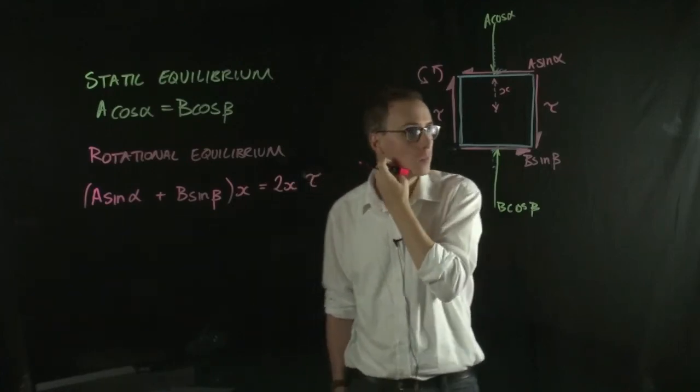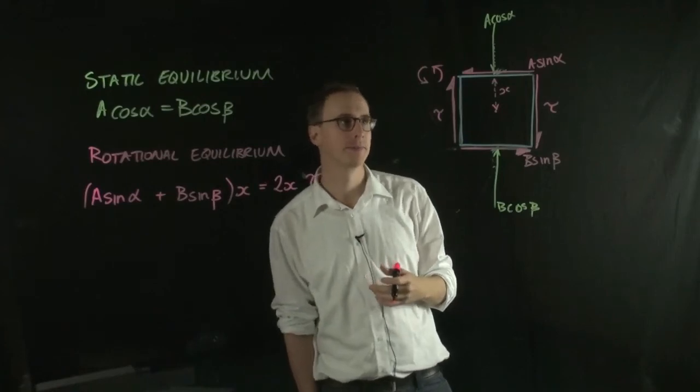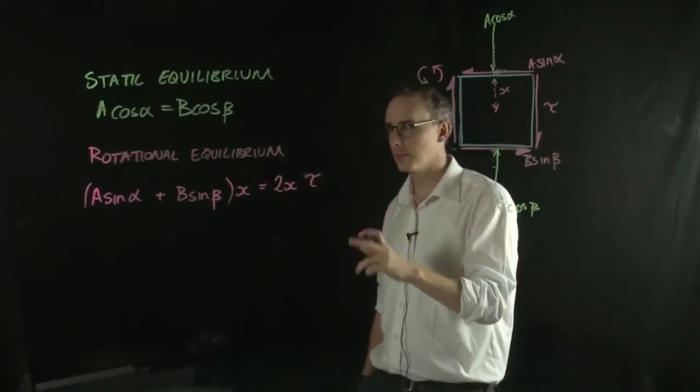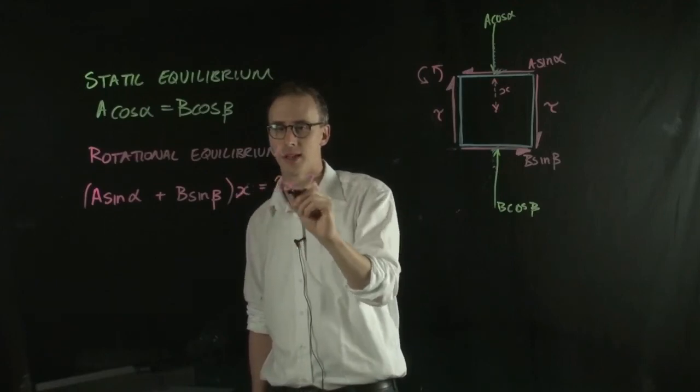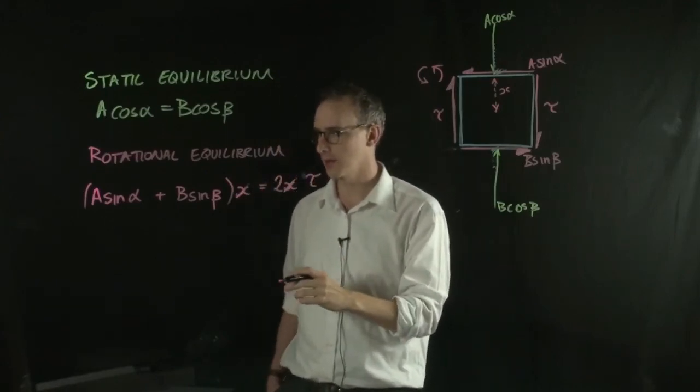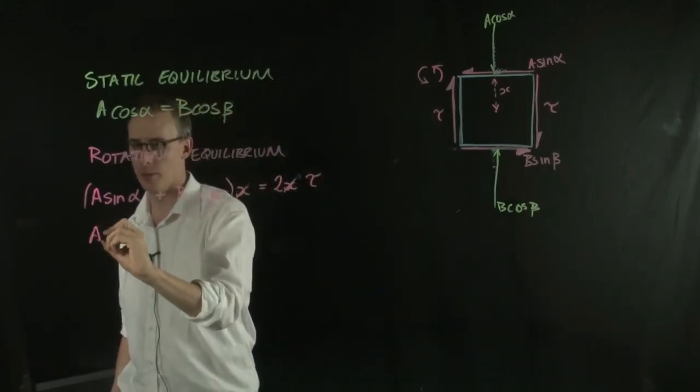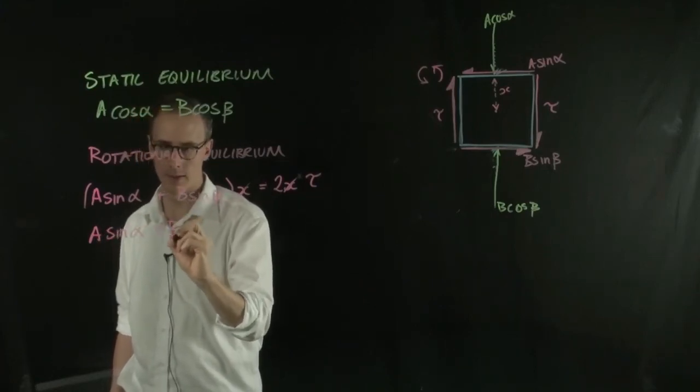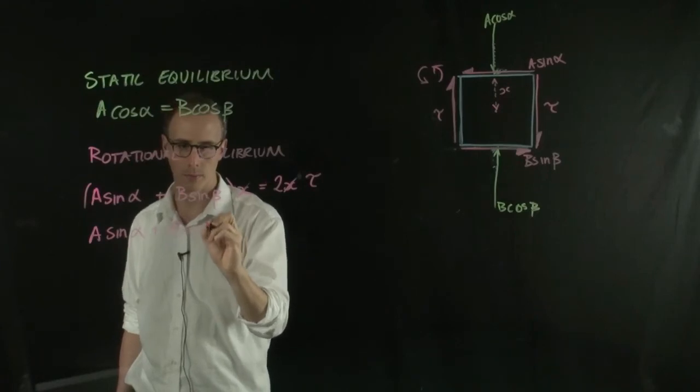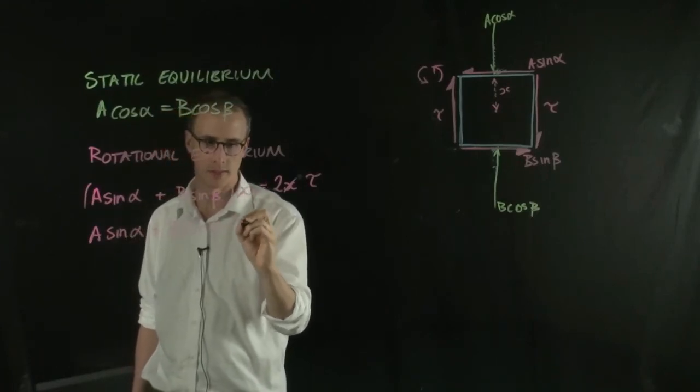And in this case, what we can do is just cancel out the X's. So what we're left with here for rotational equilibrium is A sine alpha plus B sine beta equals 2 tau.